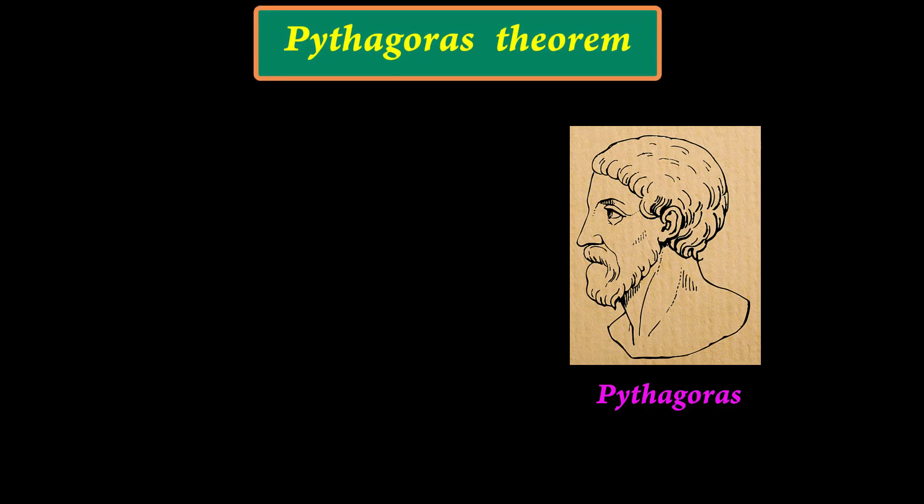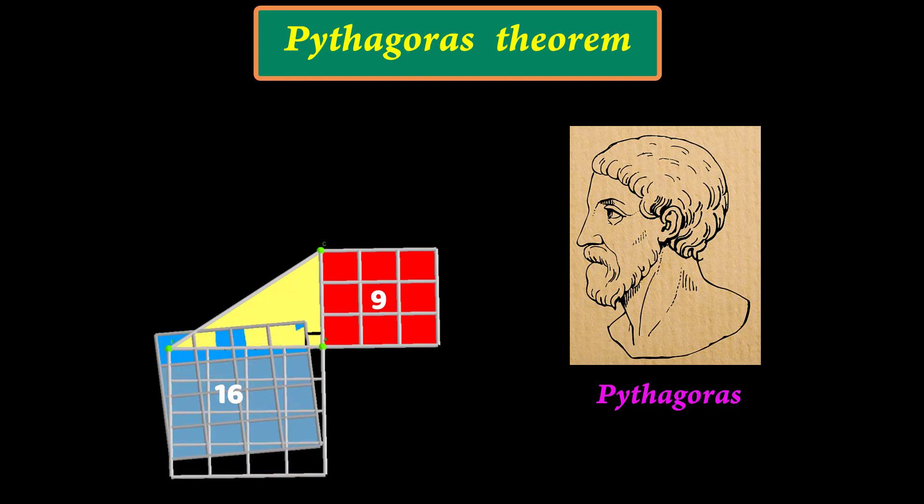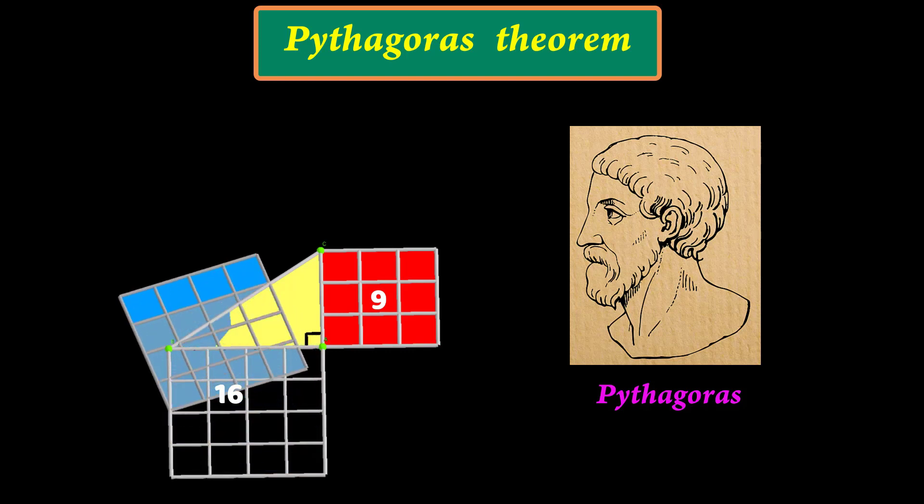First, let's take a right-angle triangle. We know that the side opposite to the right angle is called the hypotenuse. If we draw three squares on the three sides of this triangle, the square drawn on the hypotenuse will be equal to the squares of the other two sides added together.